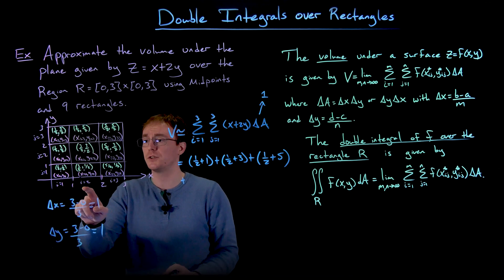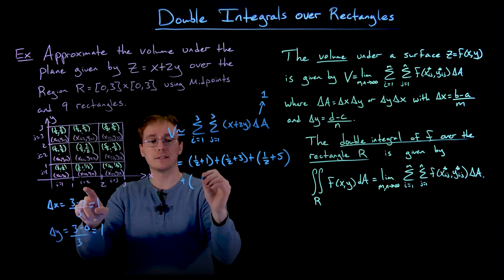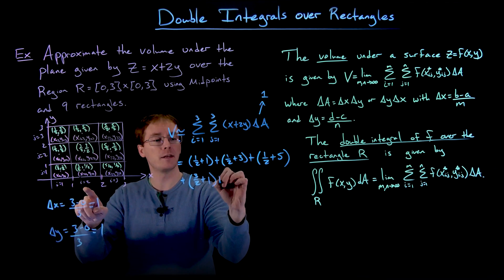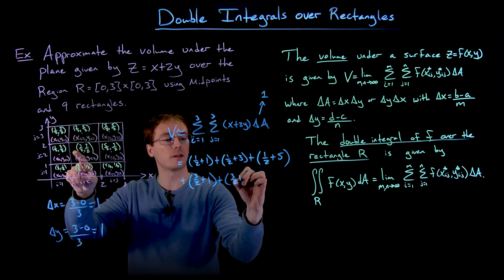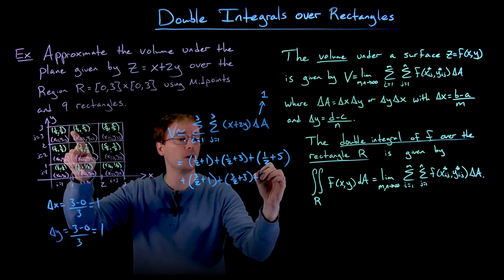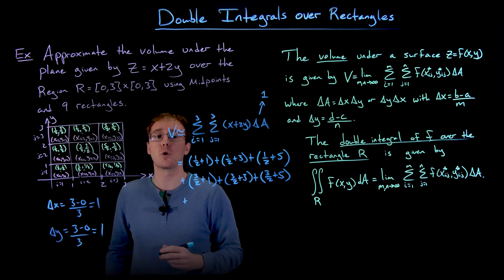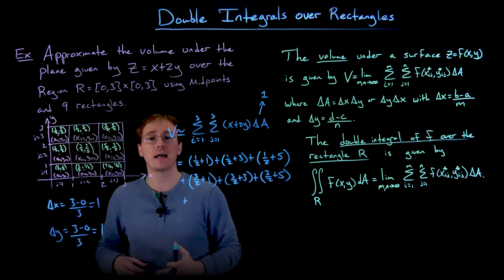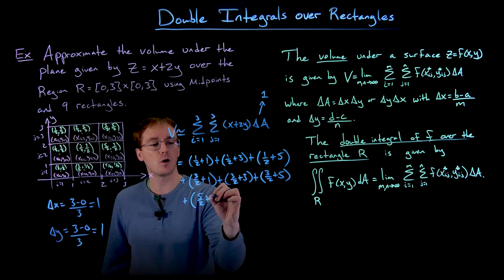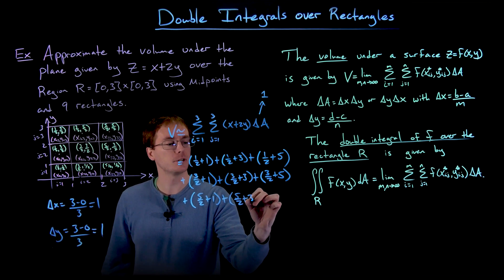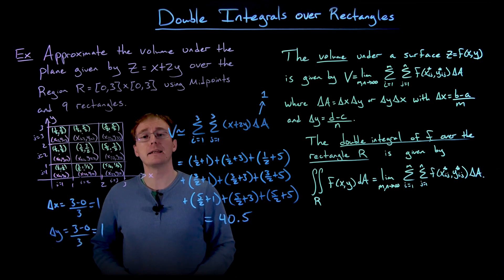The second column with i equals 2 has x equal to 3/2: x plus 2y equals 3/2 plus 1, then 3/2 plus 3, then 3/2 plus 5. The third column with i equals 3 has x equal to 5/2: x plus 2y equals 5/2 plus 1, then 5/2 plus 3, then 5/2 plus 5. Adding all those fractions and numbers together gives us 40.5. Using this double Riemann sum we were able to approximate the volume underneath our plane over this rectangular region.